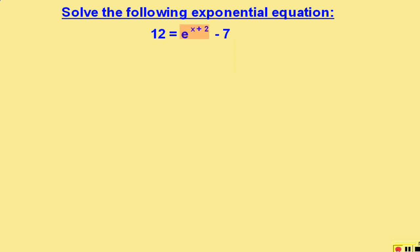So our first step is to isolate e^(x+2). We do so by adding 7 to both sides. The result is 19 = e^(x+2).